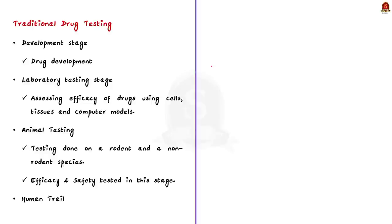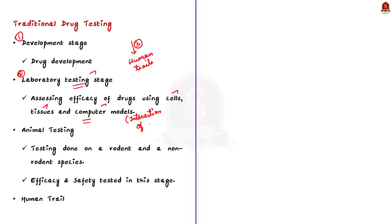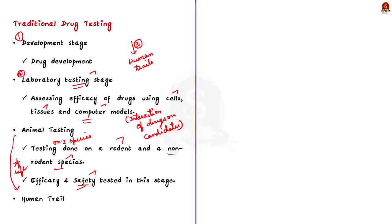Before a drug or pharmaceutical product reaches the human clinical trial phase, it goes through three stages. The first is the development stage. The second is laboratory testing, where researchers conduct tests using cells, tissues, and computer models to assess how the potential drug candidate interacts with biological systems — mainly to assess efficacy. Once the drug shows promise, it moves to animal testing on two species, often a rodent and a non-rodent, where both efficacy and safety are evaluated.